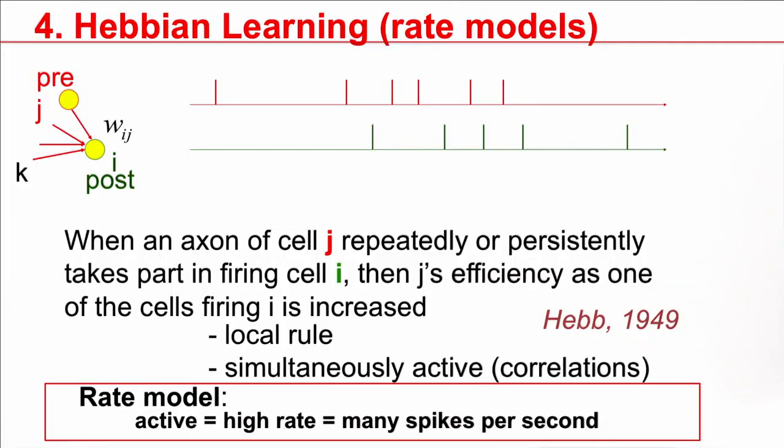Let's go back to Hebbian learning. If you look at the statement, there are two things that are important. The first one is, Hebb refers to a local procedure. So for the change of this connection point here, WIJ, what matters is just the activity of the sending neuron and the activity of the receiving neuron.